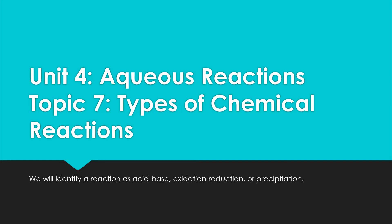Here we go with Unit 4, Topic 7. We are going to take a look at types of chemical reactions — a little introduction to identify an acid-base reaction, an oxidation-reduction reaction, or a precipitation reaction. The next couple of sections will go more in depth on acid-base and oxidation-reduction. We've already done some on precipitation — that's really where we were doing net ionic equations, determining the solid formed, and all of that.